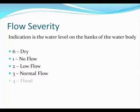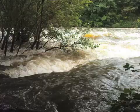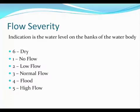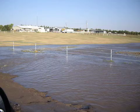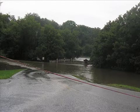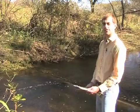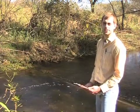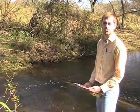Record a 4 for flood conditions. Do not sample during flood conditions — please just record a 4 here and do not continue sampling. Record a 5 for high flow when the water body is at a higher level than normal. One of the best clues of high flow is partially submerged shoreline vegetation that is normally out of the water. Flow severity here at this site is normal, as there is no exposed bank and no submerged vegetation which would constitute a high flow.